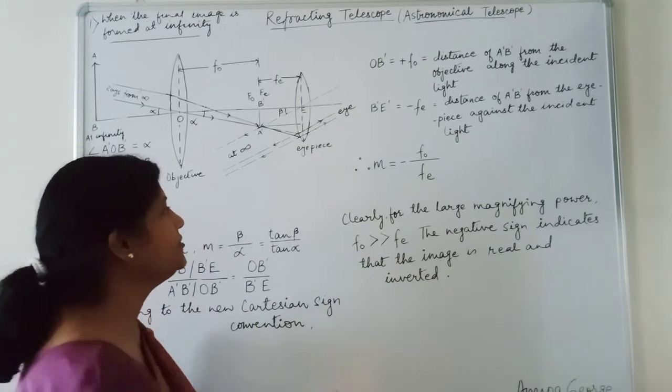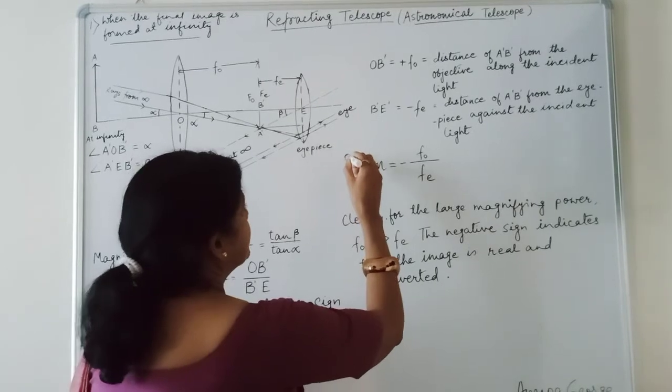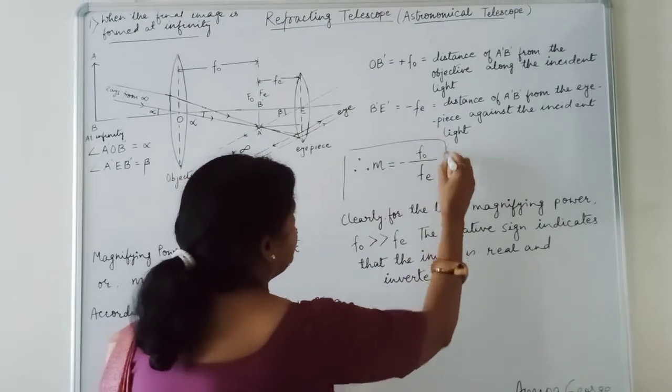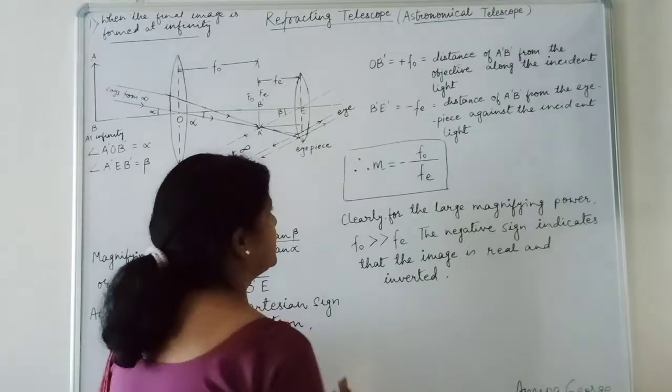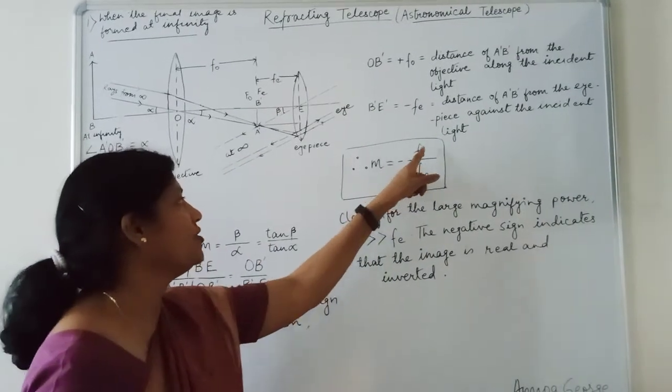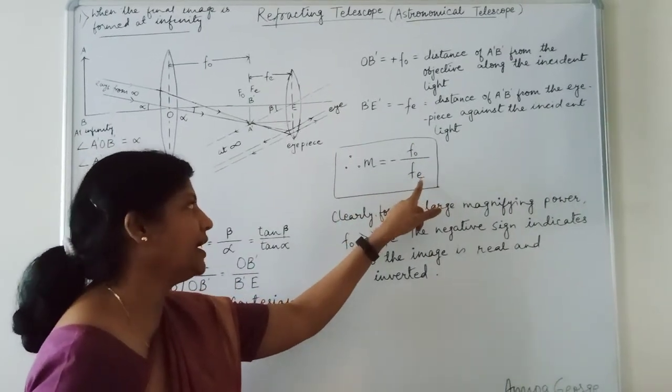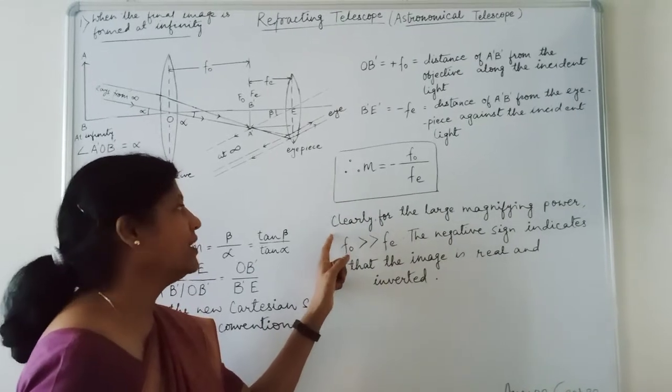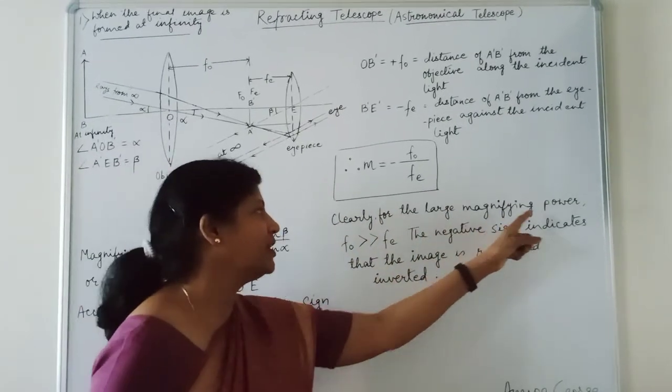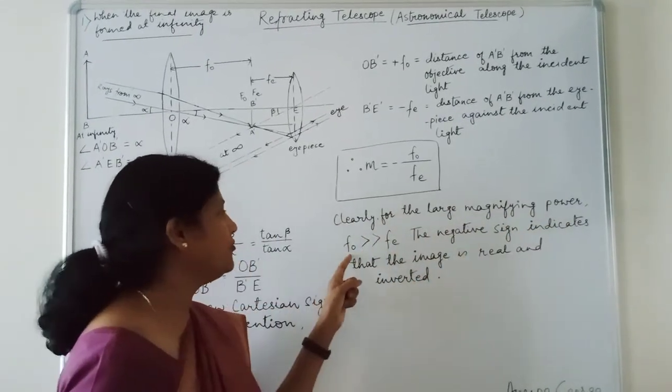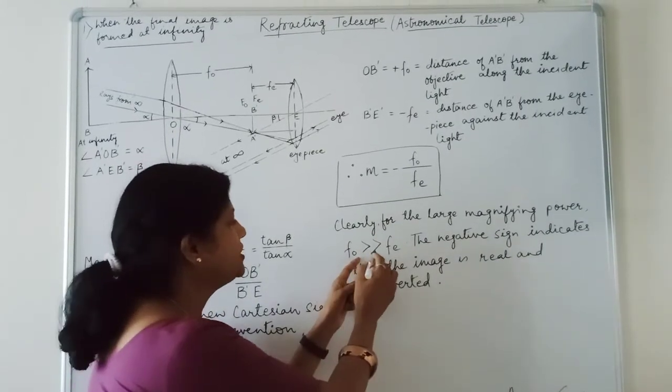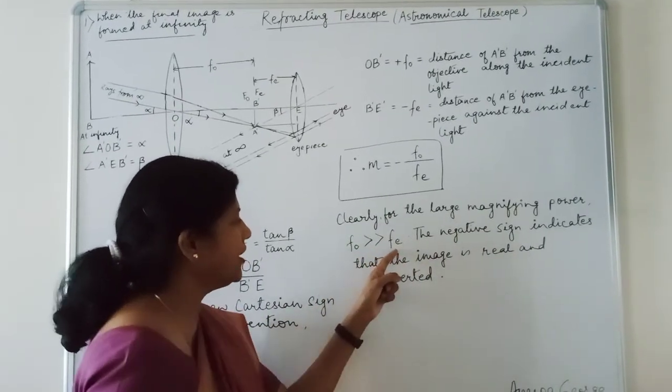Substituting the value, we have magnifying power M is equal to minus of FO upon FE. Clearly, for the large magnifying power, FO should be much greater than FE.